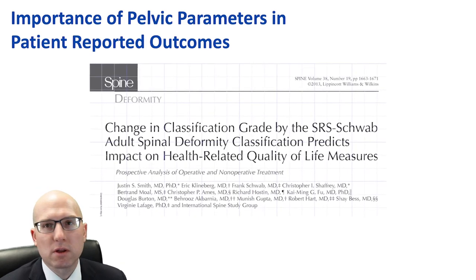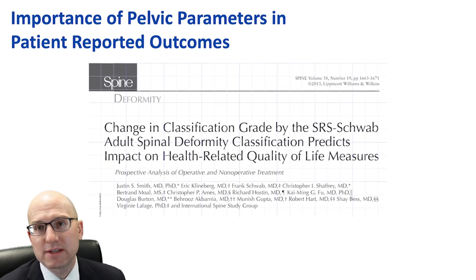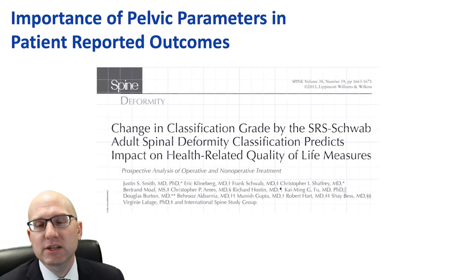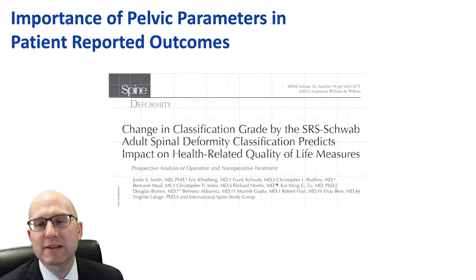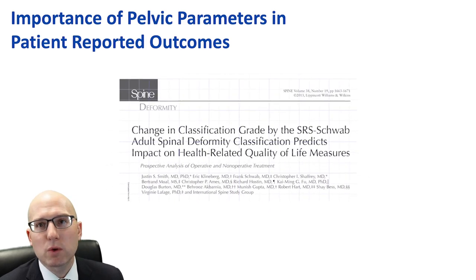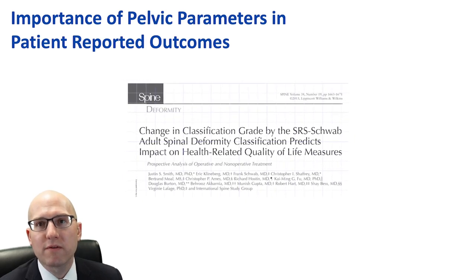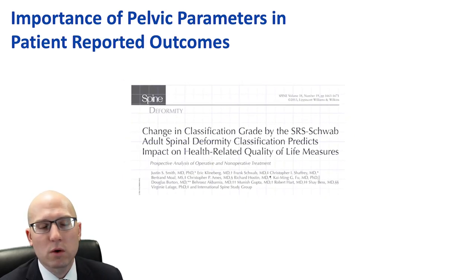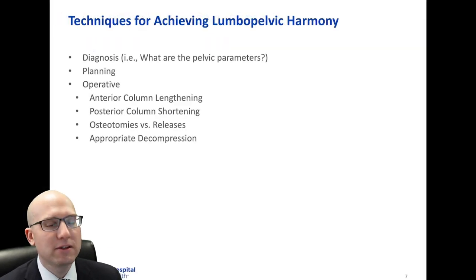This is one of the seminal papers looking at the SRS-Schwab classification system, which is really the first classification system that was used with the pelvic incidence and spinal pelvic parameters. This really helped to solidify the link and the correlation between all of the health-related quality of life outcome scores. We've then subsequently co-opted that into more of the degenerative pathologies.